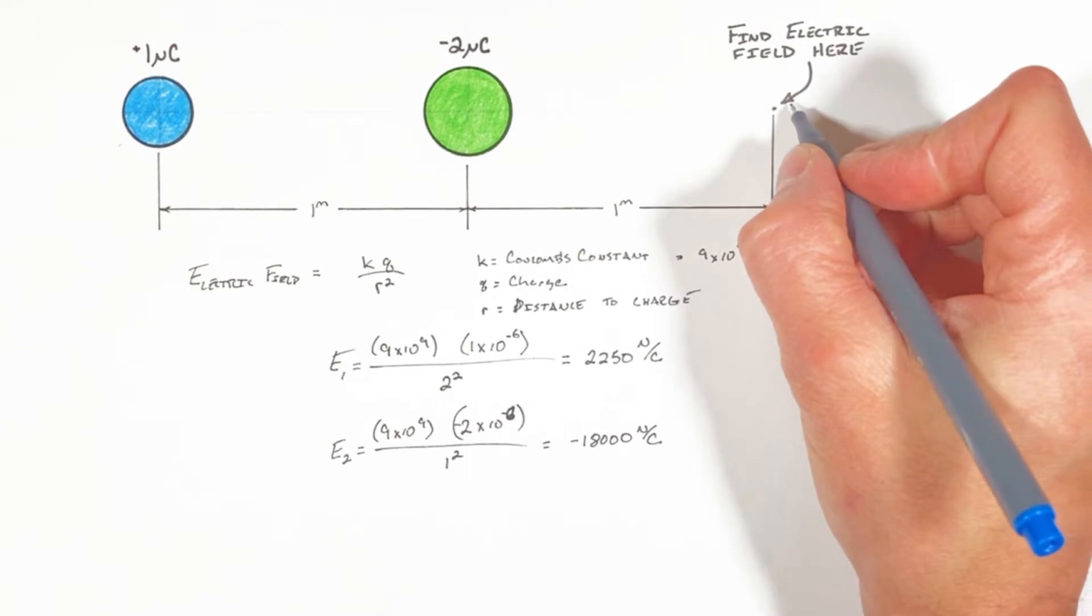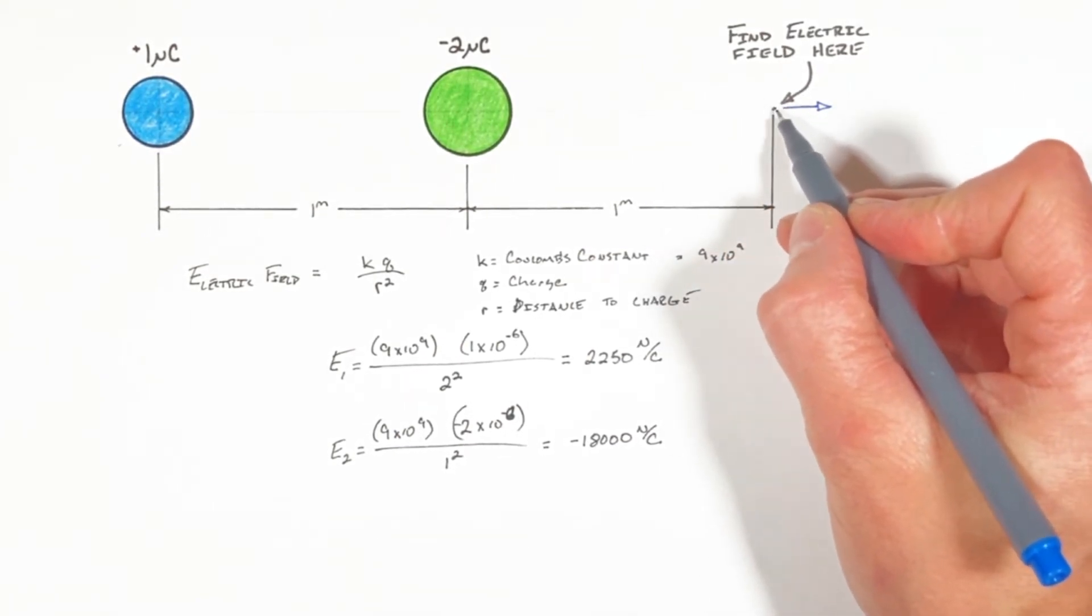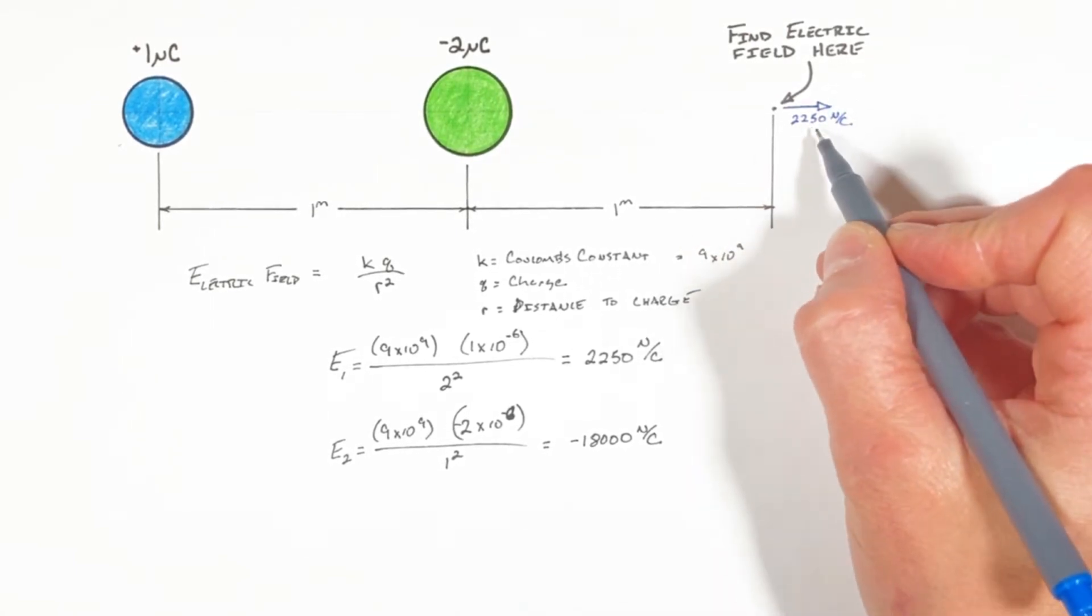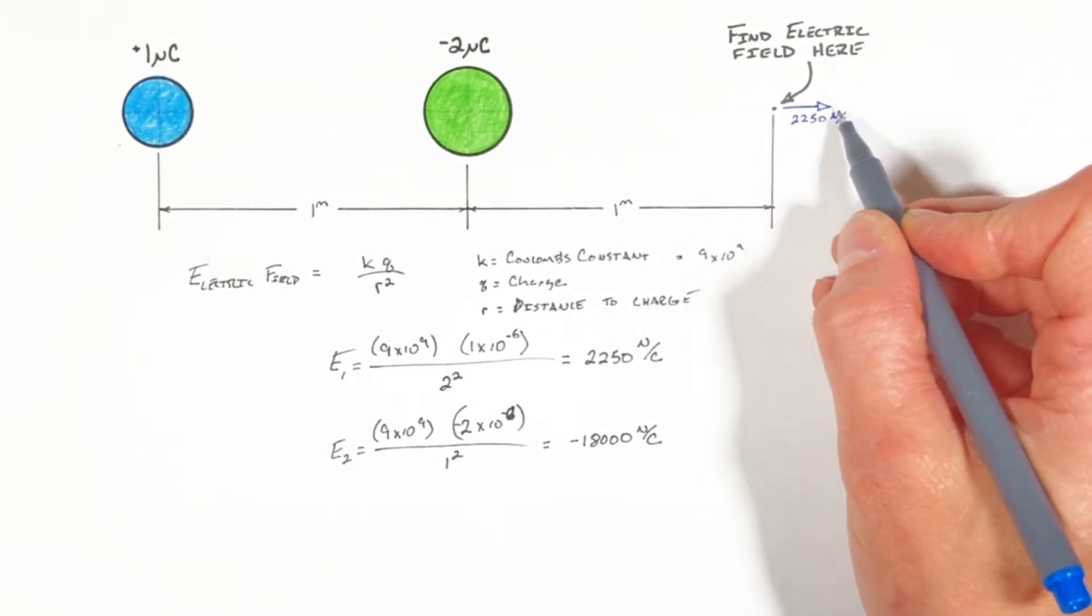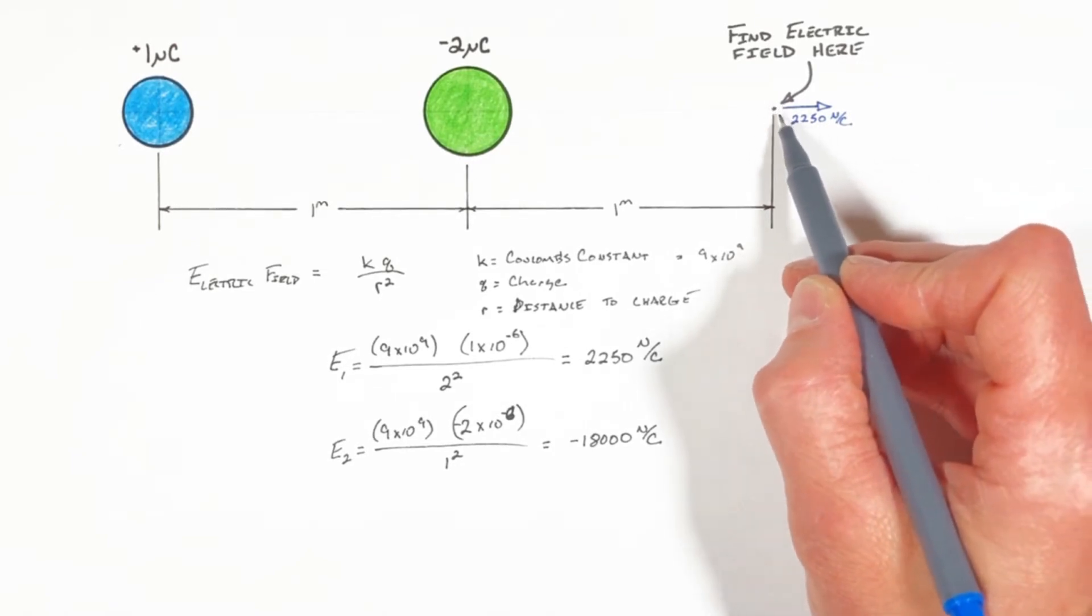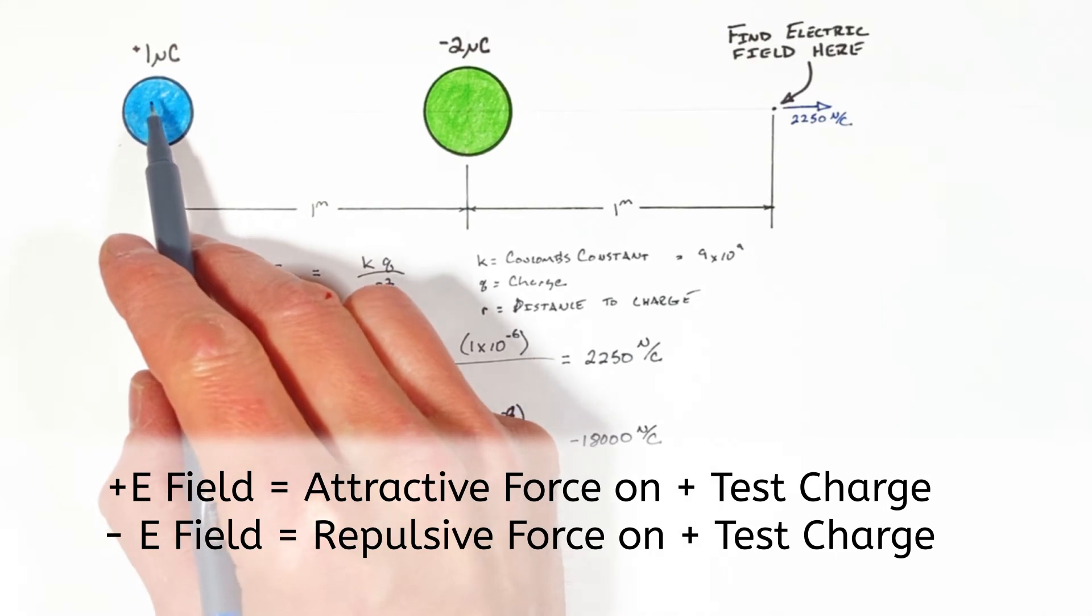The electric field from this charge is acting to the right on this point right here. And I say this electric field is positive, not because it's acting to the right in the direction which we typically call a positive direction, but rather if we were to place a positive test charge here, that positive charge would be pushed to the right, or really away from this 1 microcoulomb charge.